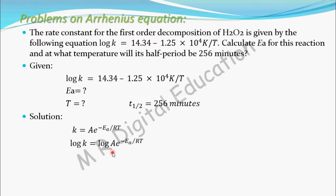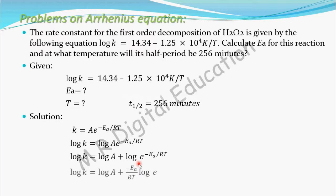Now expand this term: log(A · e^(−Ea/RT)) is like log(M × N), which equals log M + log N. So this becomes log A + log(e^(−Ea/RT)). This is similar to log(M^N), so you can write it as (−Ea/RT) × log e, where log e is to the base 10.